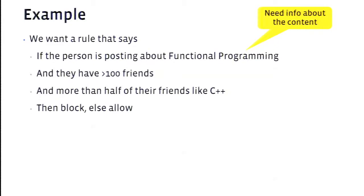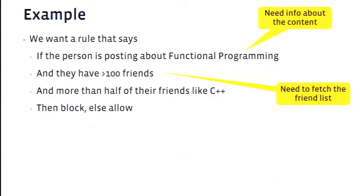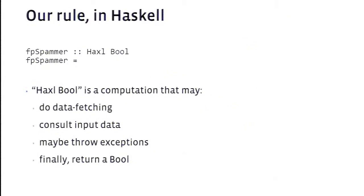Where do we get the information for each condition? Whether they're posting about functional programming is part of the content they're trying to post. Whether they have more than 100 friends requires talking to the storage service to query how many friends the current user has. Whether their friends like C++ is stored in what we call the Facebook graph. Let's look at what the code for the rule looks like — we write our rules in Haskell.